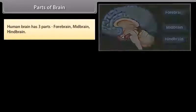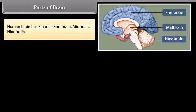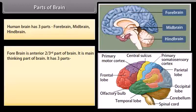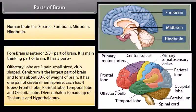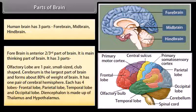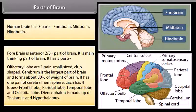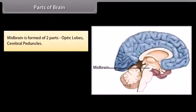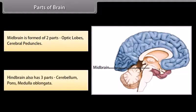The human brain has three parts: forebrain, midbrain, and hindbrain. Forebrain is the anterior two-thirds of the brain and is the main thinking part. It has three parts: olfactory lobes (one pair, small-sized, club-shaped), cerebrum (the largest part of the brain, forming about 80% of brain weight, with one pair of cerebral hemispheres each having four lobes — frontal, parietal, temporal, and occipital), and diencephalon (made of thalamus and hypothalamus). Midbrain is formed of two parts: optic lobes and cerebral peduncles. Hindbrain has three parts: cerebellum, pons, and medulla oblongata.